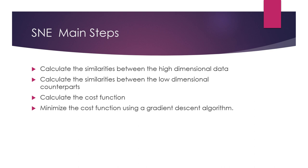It is very possible that the low dimensional space at the beginning will not be a good representative of the high dimensional data. Because of that, there is an error between these probabilities. This error we are going to measure based on a cost function. We are going to calculate this mismatch in terms of probabilities based on this cost function, and we are going to optimize this cost function using the gradient descent algorithm, iteration by iteration. Because of that, at the end we can obtain the optimal locations of this low dimensional data.